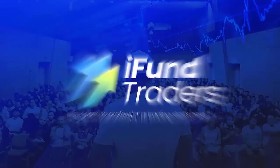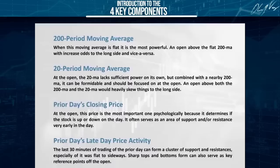This is going to revolutionize your trading. The Fabulous Four is called the Fabulous Four because it's made up of four fabulous items. Item number one: whatever you're trading, we need a 200 period moving average. That's item number one — a 200 period simple moving average. I use simple moving averages.